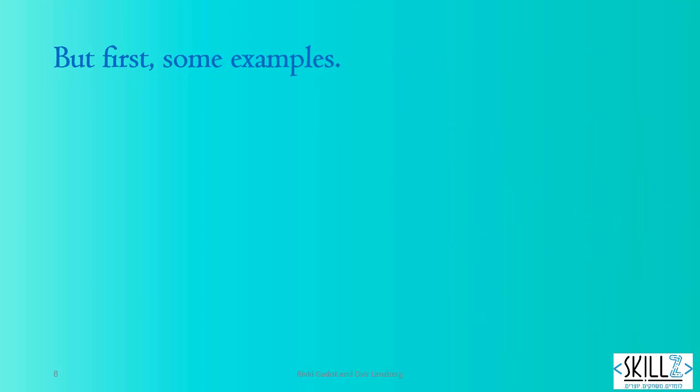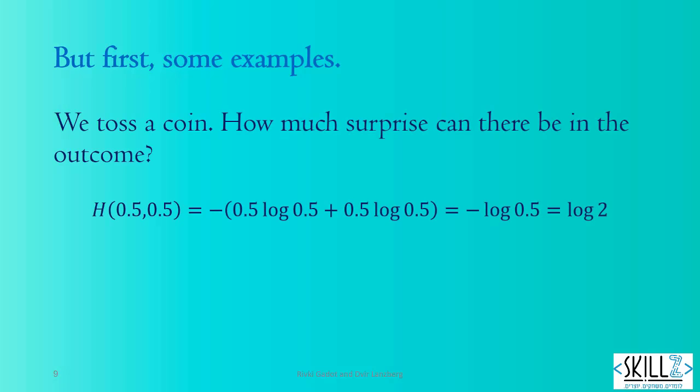But first, some examples. The entropy of a coin toss is minus half log half plus half log half. That equals log 2. The base of the log is arbitrary. We usually choose it to be 2. Pause the clip and make sure the math comes out all right.